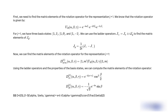Now we can find the matrix elements of the rotation operator for the representation J equal to 1. D^1_{M'M}(alpha, beta, gamma) equal to <1,M'| UR(alpha, beta, gamma) |1,M>. Using the ladder operators and the properties of the basis states, we can compute the matrix elements of the rotation operator.